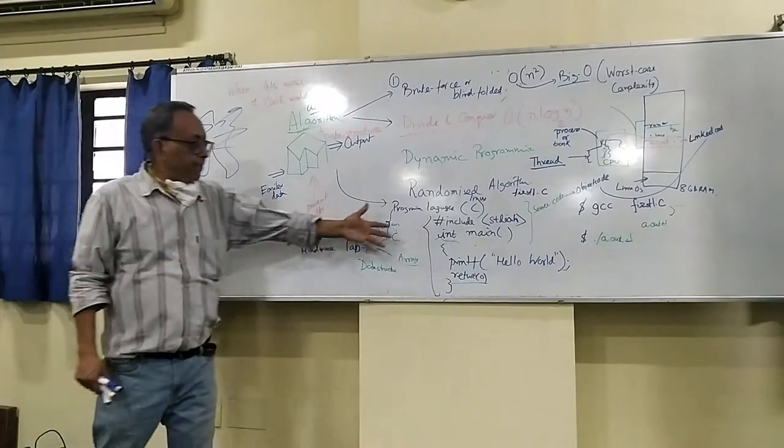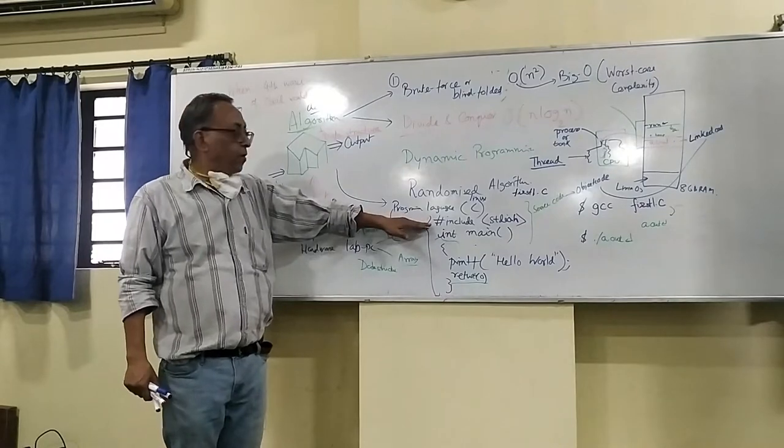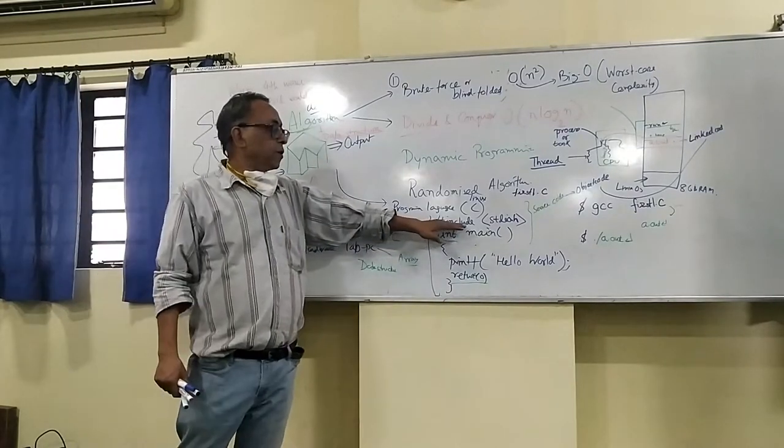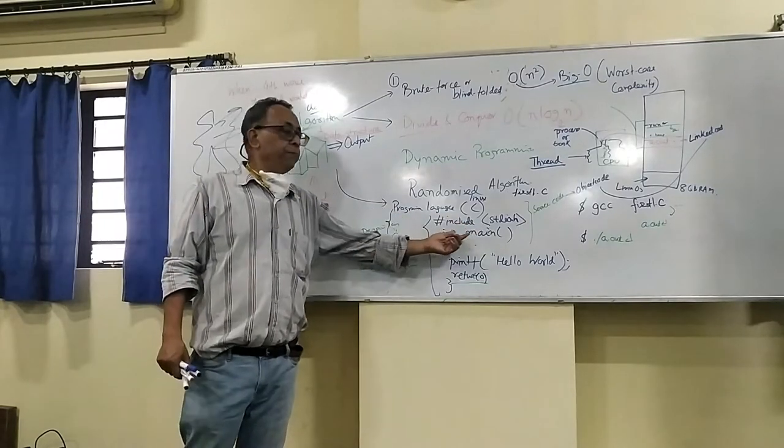Now we try to write a program. This is a simple program. First a compiler directive, we call hash include. It is not a language. Hash include is compiler directive, standard I/O. This is a compiler directive.